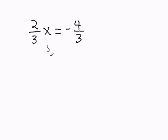In this problem, to solve for x, we multiply the fraction in front of x by its reciprocal. The reciprocal of 2 over 3 is 3 over 2.